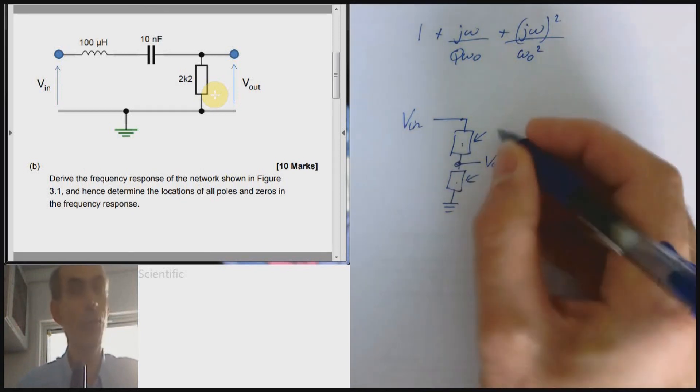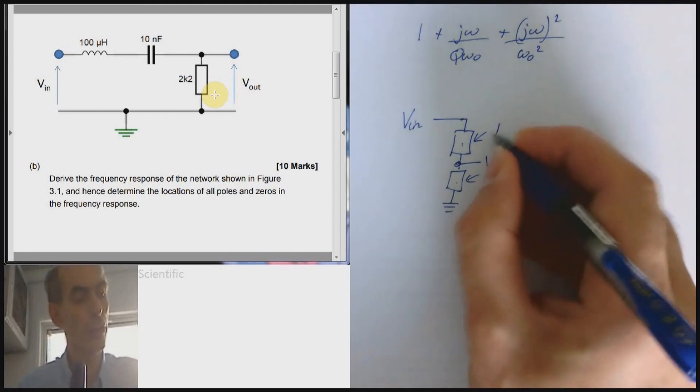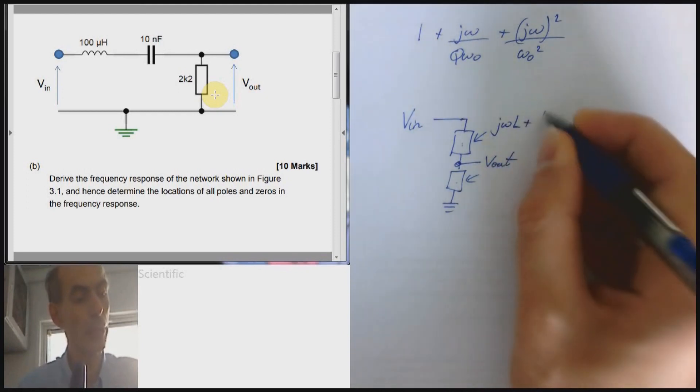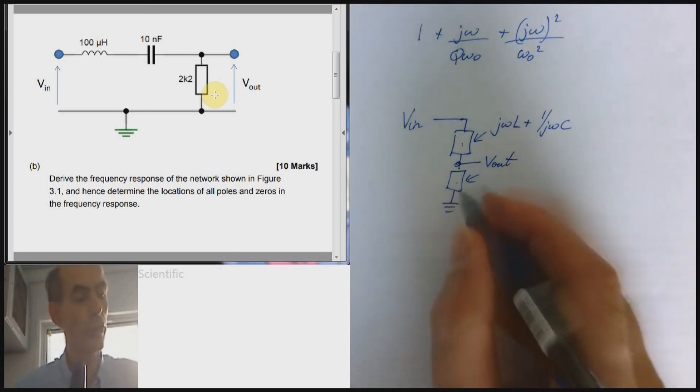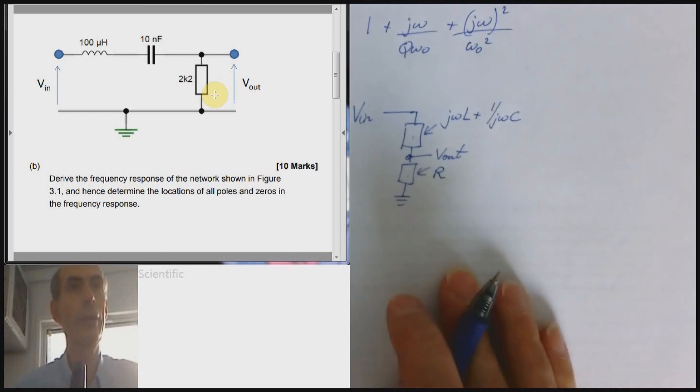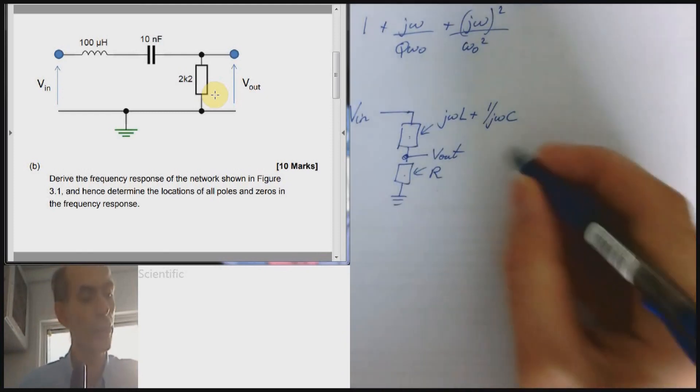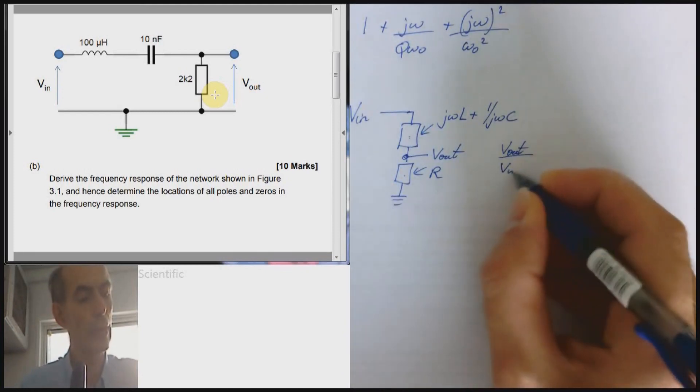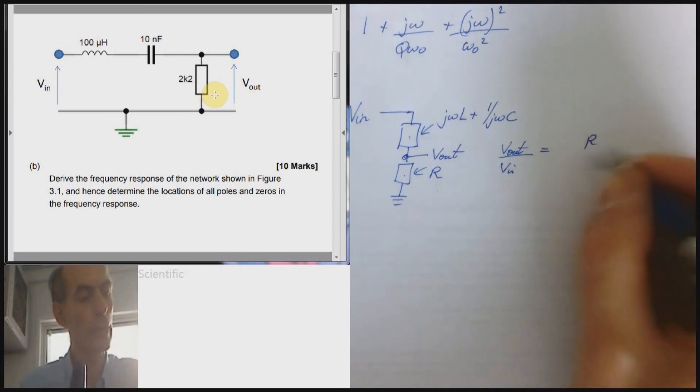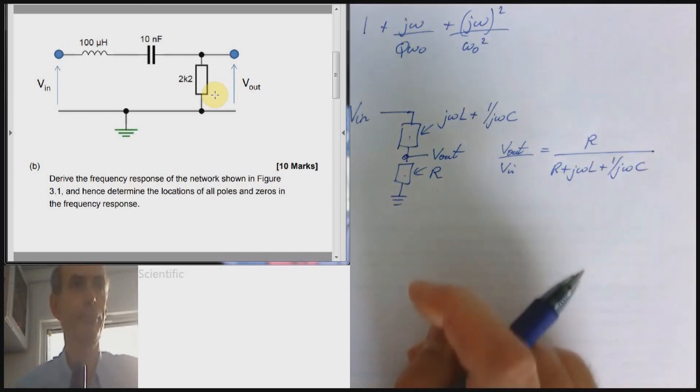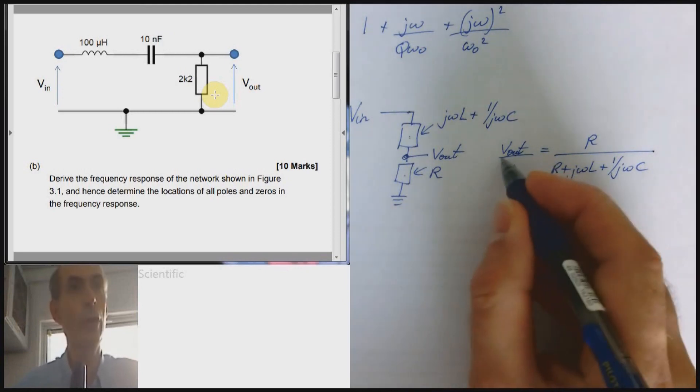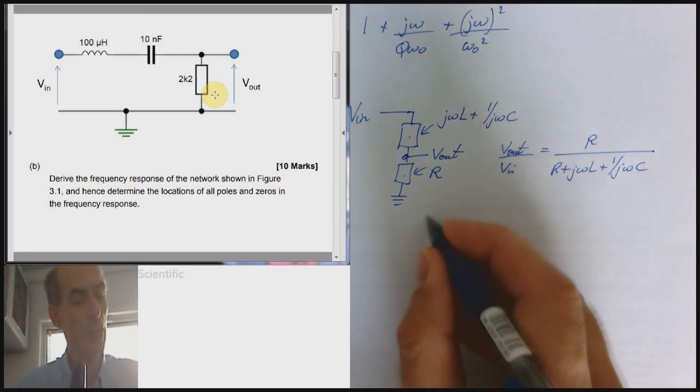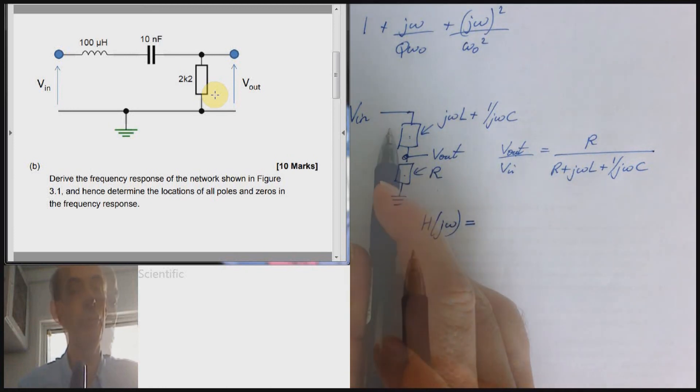The impedance of this thing here, this network, is an inductor in series with a capacitor. So that would be jωL plus 1 over jωC. The impedance of this component is a resistor. So that's just R. So apply the standard of the potential divider equation. And we would get V_out over V_in equals R over R plus jωL plus 1 over jωC. And that is the frequency response. That is what we term H(jω). The output divided by the input. Right.